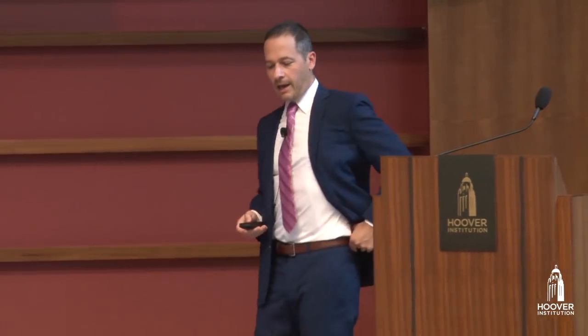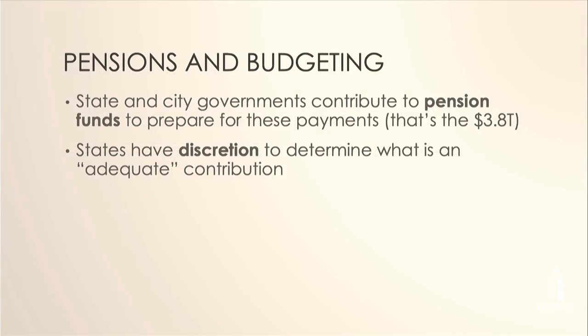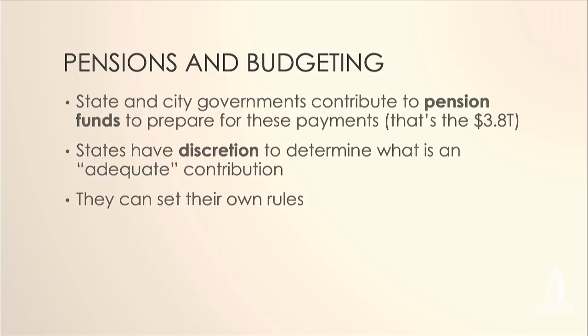How do governments budget for this? They contribute to pension funds — that $3.8 trillion mentioned earlier. States have discretion to determine what constitutes an adequate contribution. This is where the balanced budget issue comes in — the state is essentially allowed to decide for itself whether it's contributing enough. We're somewhat expected to take their word for it. Unlike companies, state and local governments can set their own rules.